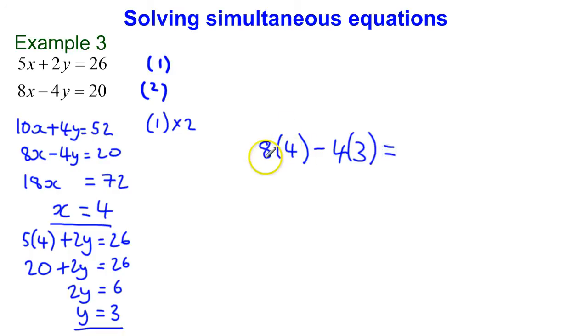And I'm expecting this to be equal to 20. So let's have a check. 8 times 4 is 32, take away 4 times 3 is 12, and 32 take away 12 is, in fact, 20. So that tells me that this is correct. Thanks very much for joining me. I'll see you next time.